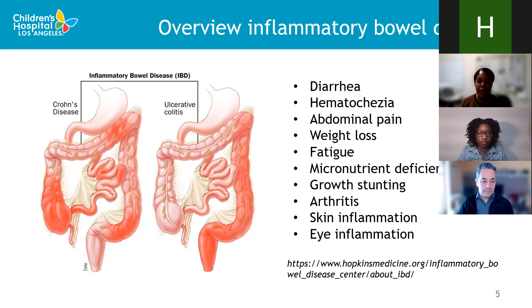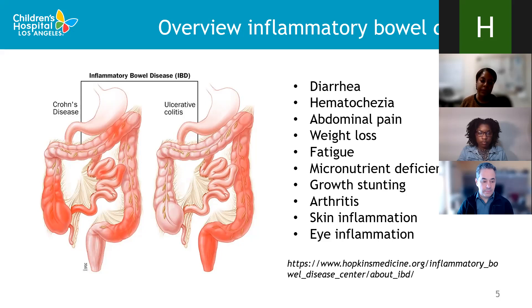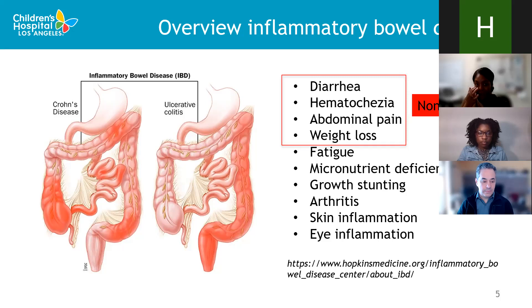Crohn's disease manifests as inflammation anywhere from the mouth to the anus, versus ulcerative colitis, which has a predictive pattern of continuous inflammation starting from the rectum and ascending more proximally in the colon. IBD is a heterogeneous group of diseases on a spectrum, and some patients who don't fit either category are reclassified as indeterminate colitis. Symptoms vary based on location and severity of inflammation. Common presenting symptoms include diarrhea, bloody stool, abdominal pain, weight loss, and striking fatigue.